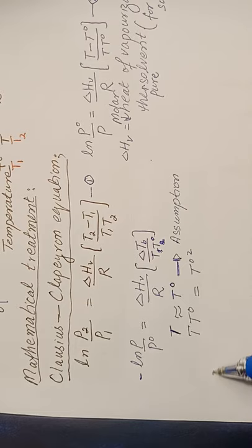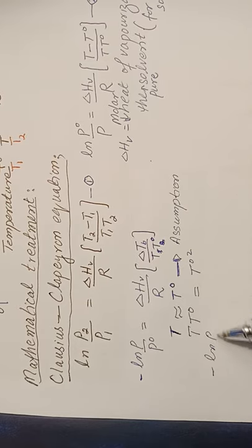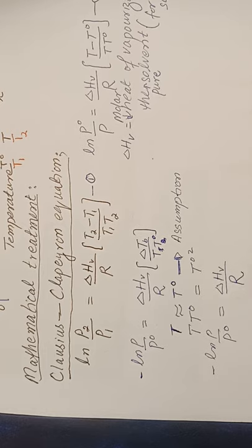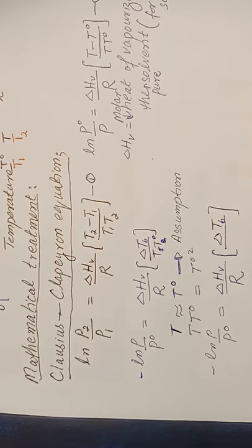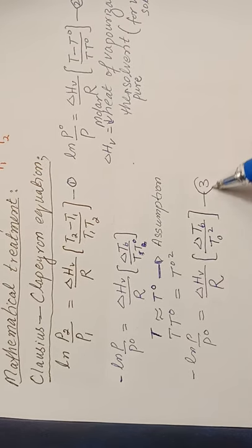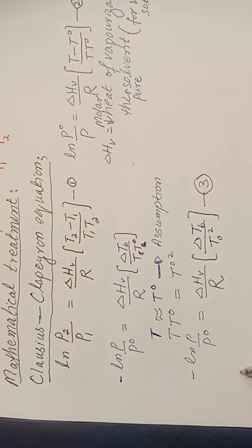We can now rewrite the equation as: −ln(P/P₀) = (ΔHv / R) × (ΔTb / T₀²), giving us equation number 3. This equation relates the vapor pressure lowering to the elevation in boiling point through the molar heat of vaporization and the boiling point of the pure solvent squared.